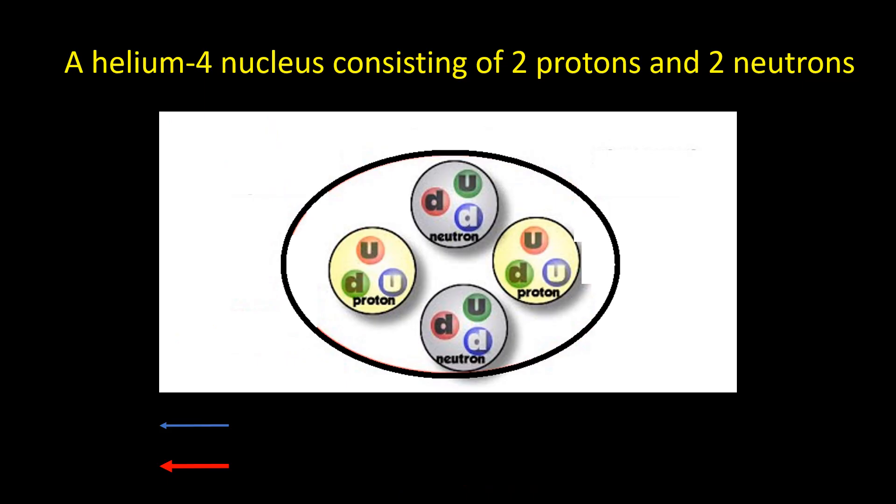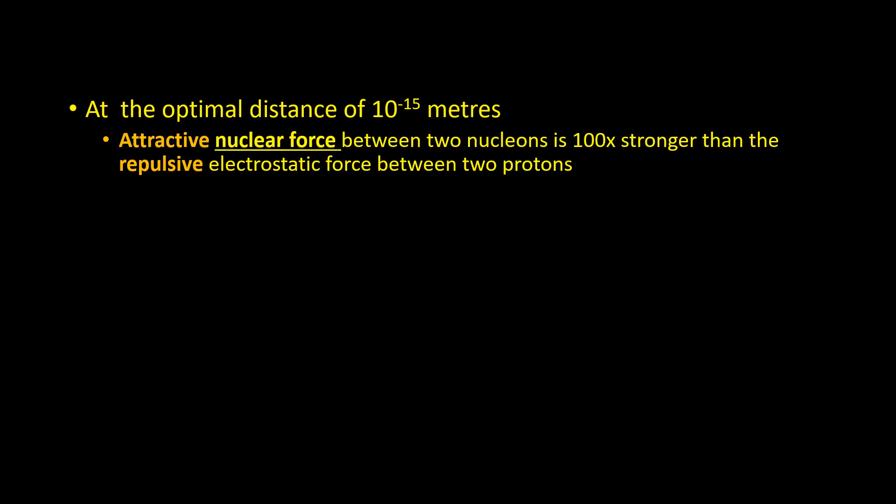As an example of the nuclear force, let's consider a helium-4 nucleus: two protons, two neutrons. The blue lines show the repulsive force between the two protons, pushing them apart. The red lines show the much stronger nuclear force, holding all the nucleons together. At the optimal distance of 10 to the minus 15 meters, the attractive nuclear force between two nucleons, for example a proton and a neutron, is a hundred times stronger than the repulsive electrostatic force between two protons.